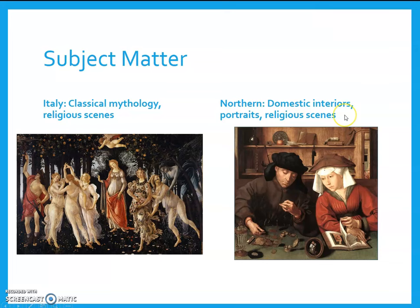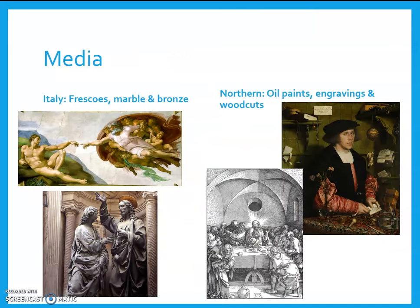In the North, they still have plenty of religious scenes since a lot of the art shows up in churches. But you also see a lot more domestic interiors — people in their daily lives doing regular work, like you see in Quentin Macis' Moneylenders here. Also portraits, more focused on individual faces. In this one, you've only got two people as opposed to the crowd of people in Botticelli's.